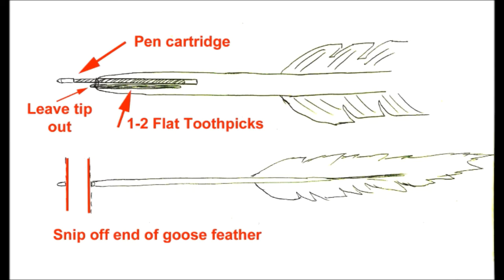You clip off the end—you see on the bottom of the graphic there—you snip off the end of the goose feather with a pair of scissors or wire cutters, and you want to open up that end.